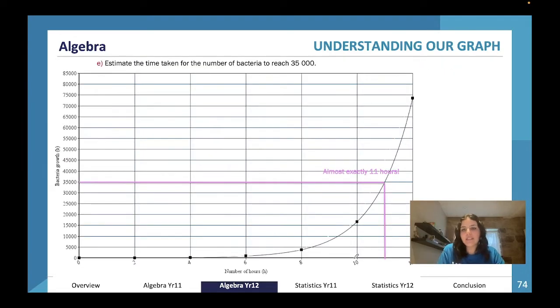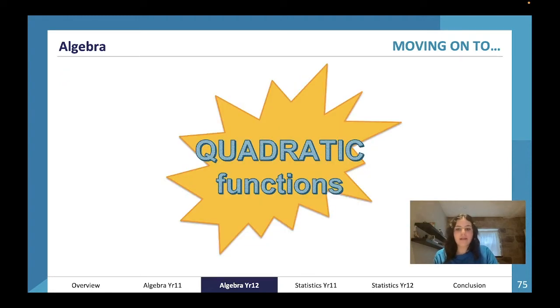Estimate the time taken for the number of bacteria to reach 35,000. We have a look here: 35,000, we track all the way over, we go down, and that's about 11 hours.